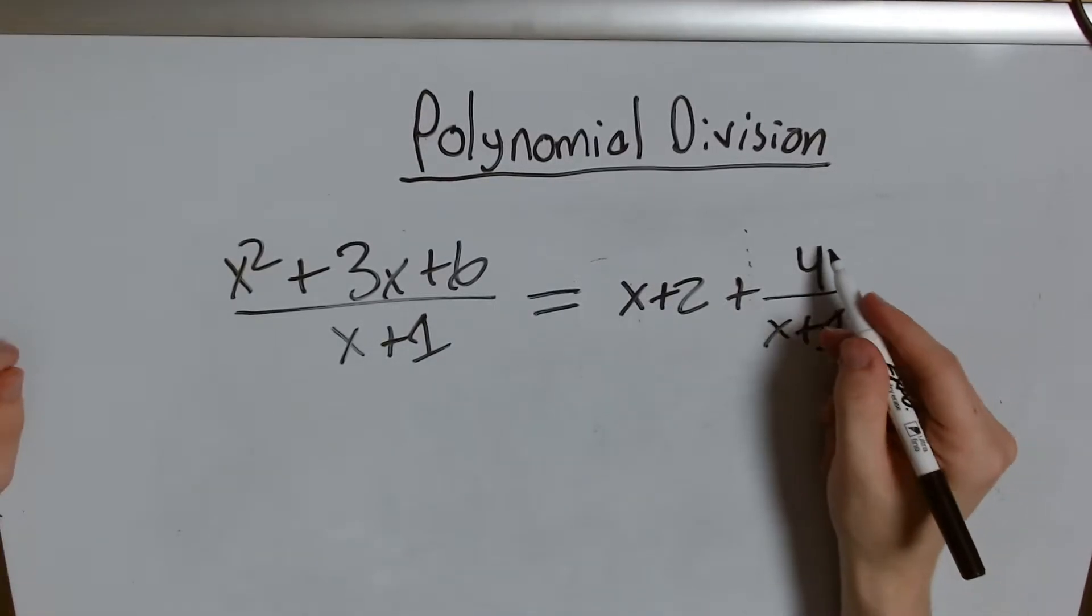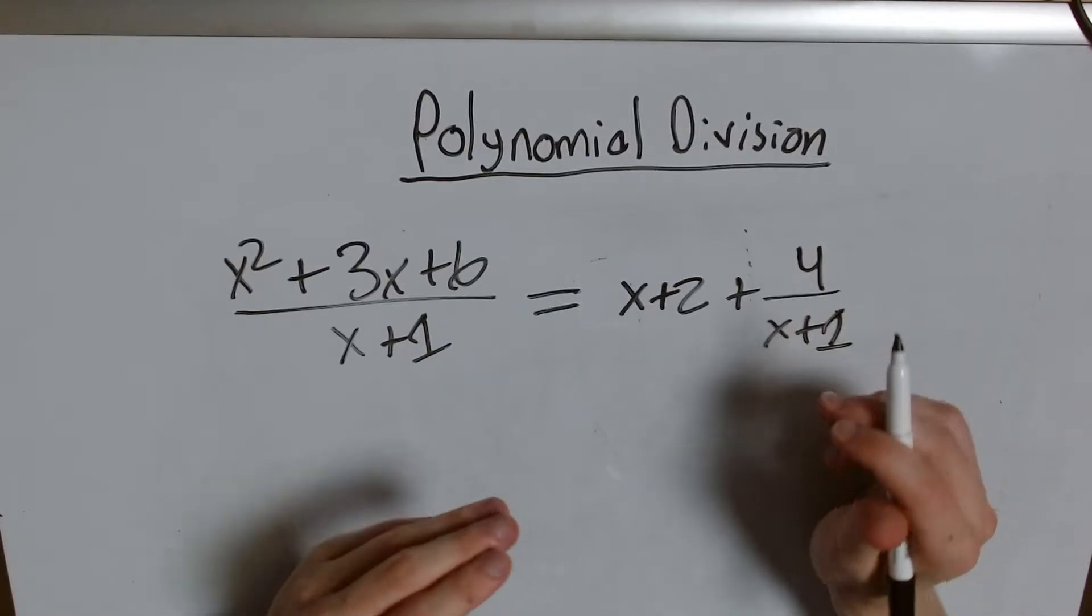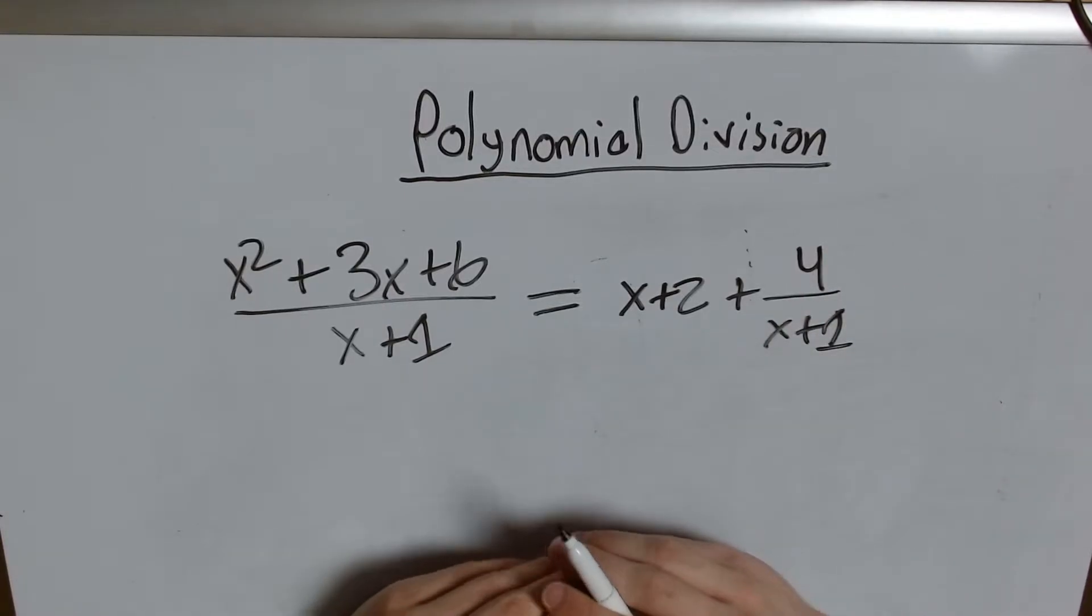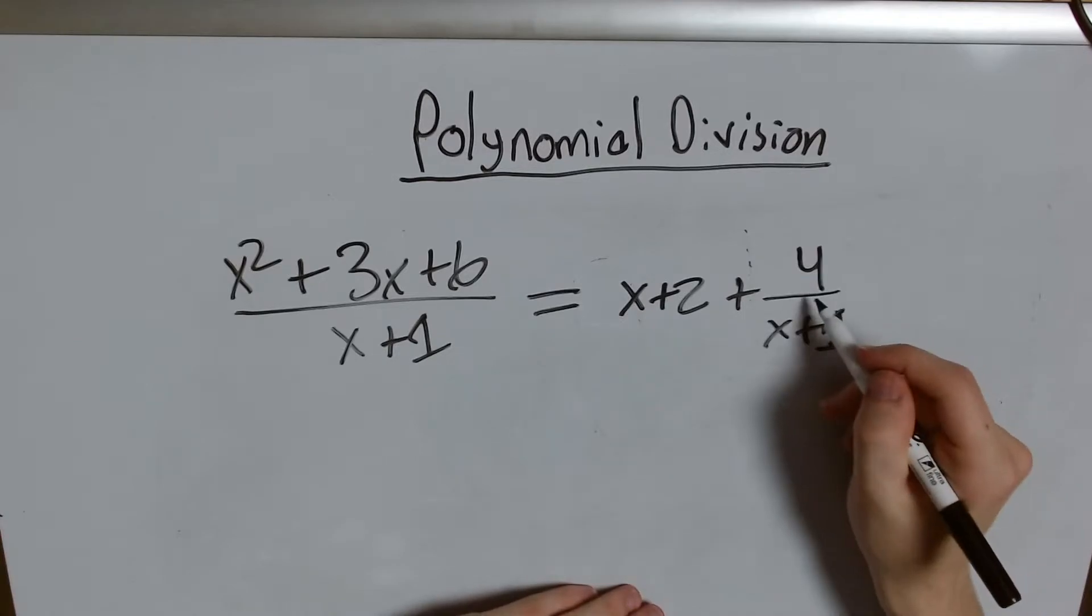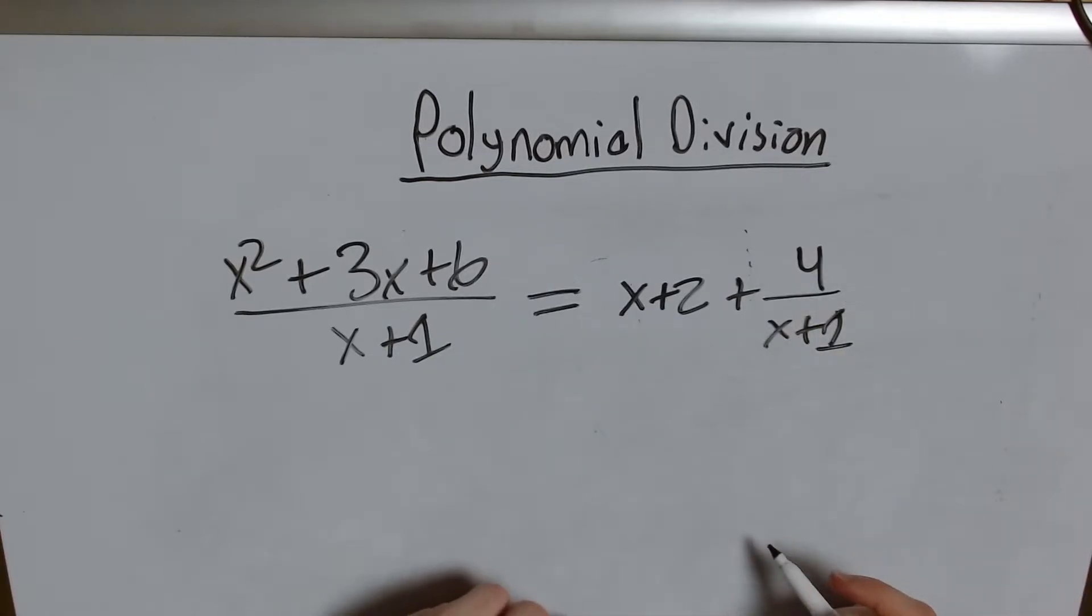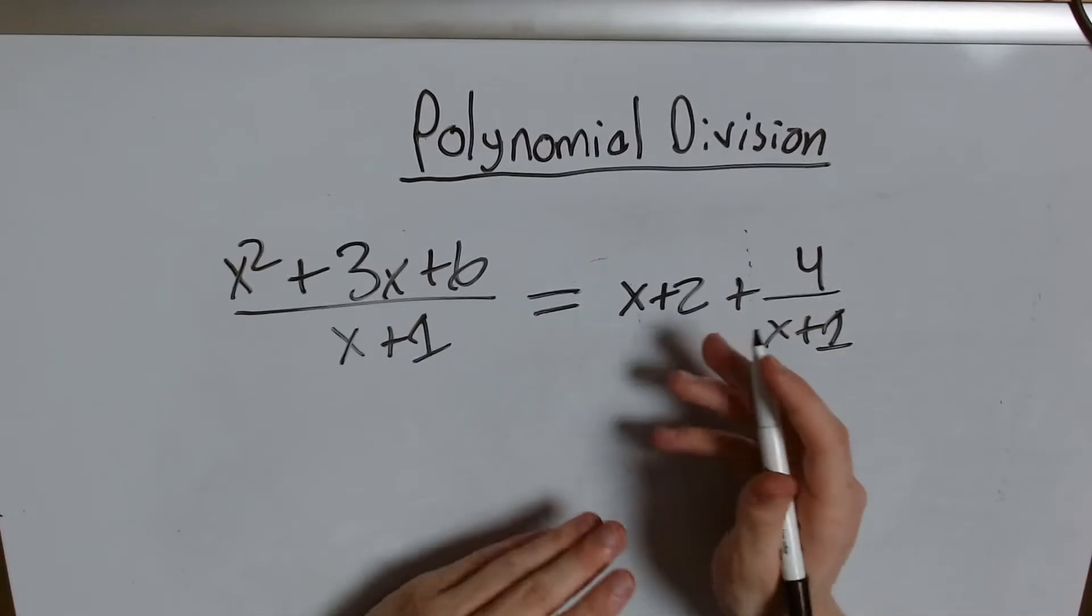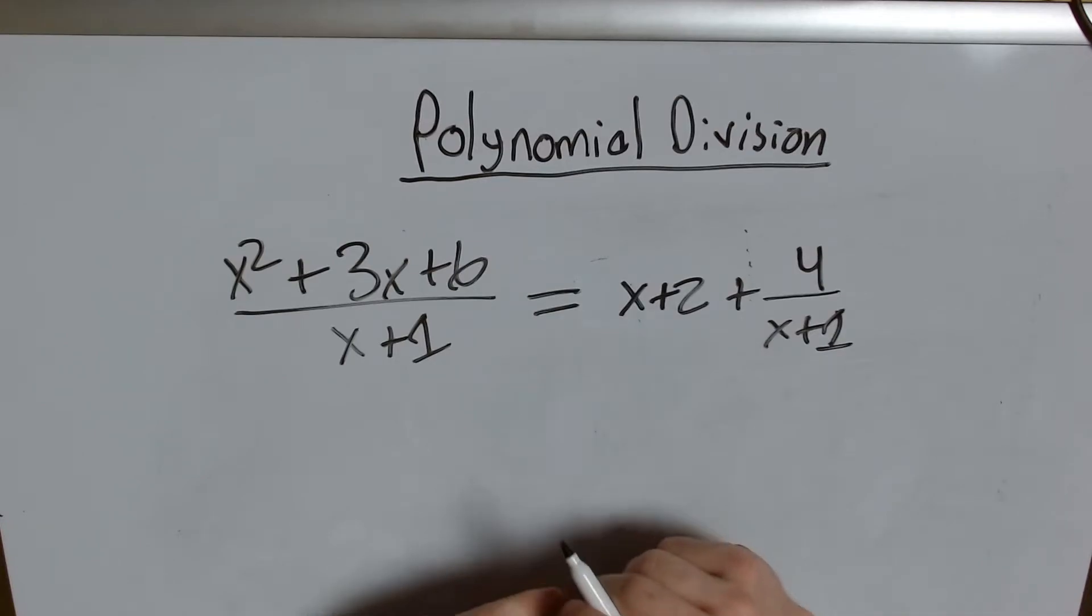Now 4 is our remainder and we weren't fully able to divide it out. So we can't have 4 by itself. We have to have 4 over x plus 1 what we were originally divided by. You might say why? Excellent question.